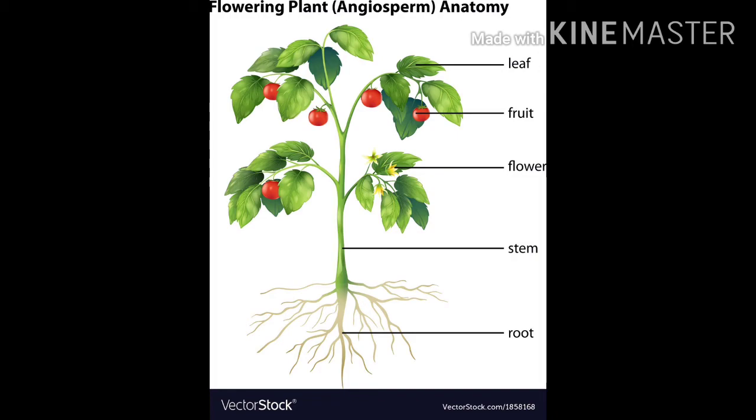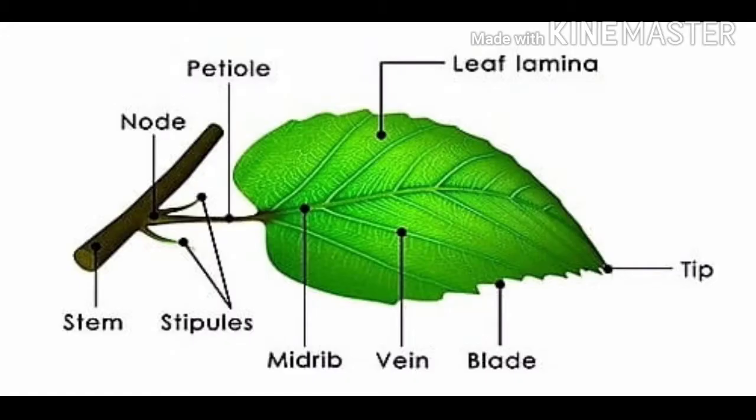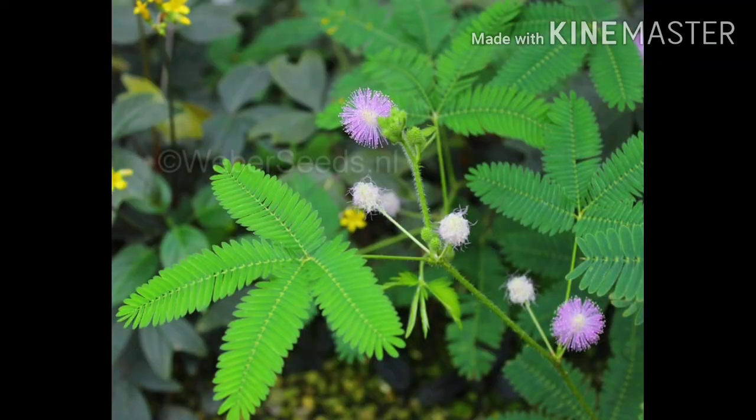The next one is parts of the leaf. The parts of the leaf are tip, leaf lamina, petal, nod, stem, stipulus, midrib, vein and the blade.